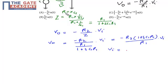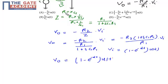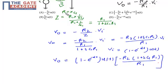Now Vi is equal to (1 − e^(−αt)) · u(t). Substituting this value of Vi, the output V0 becomes −R2 · (1 + sC1R1) / R1 times (1 − e^(−αt)) · u(t).